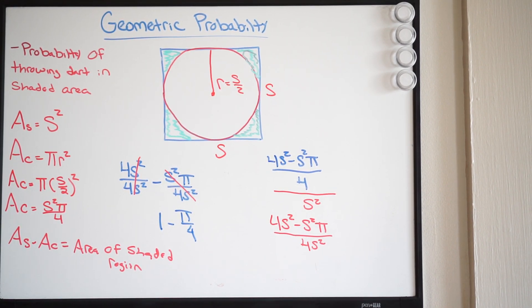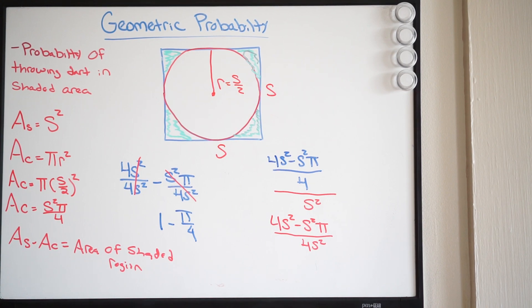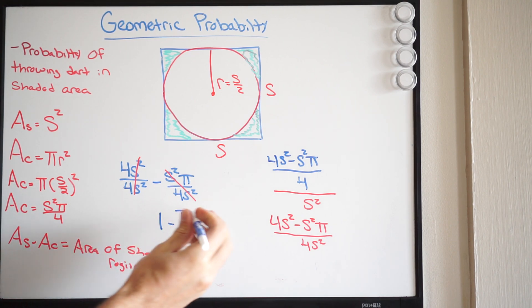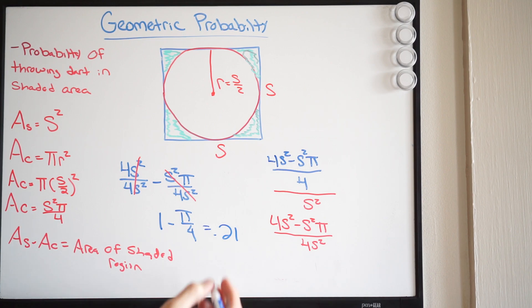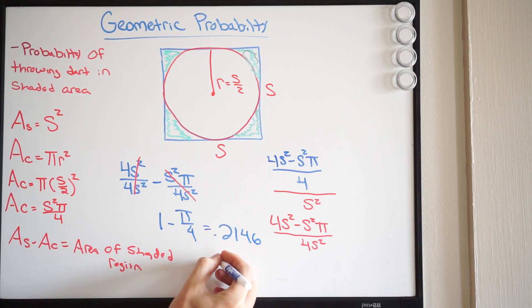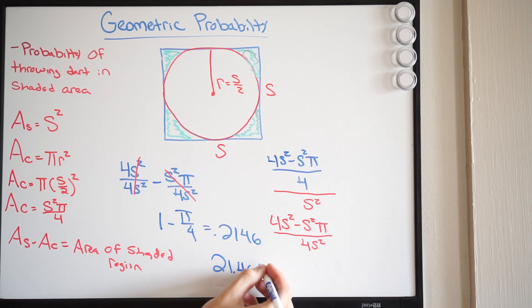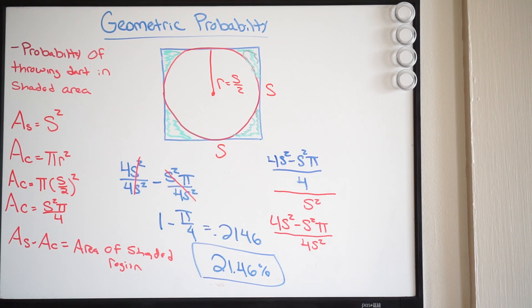So when we compute 1 minus pi over 4 in our calculator, we get approximately 0.2146. In other words, 21.46 percent. So if you were to throw a dart randomly at this board, you have a 21.46 percent chance of landing in this shaded region. And that is it.